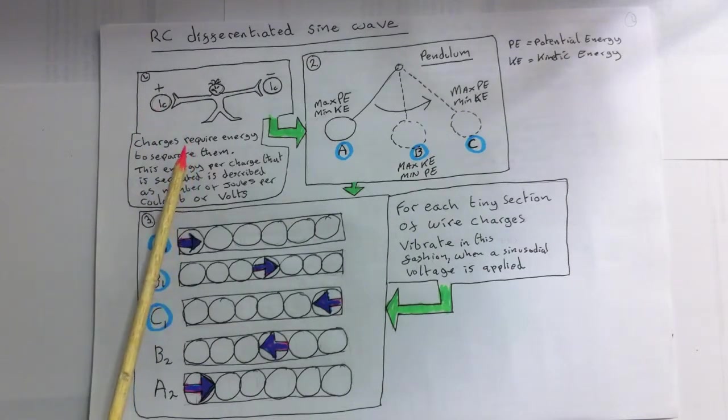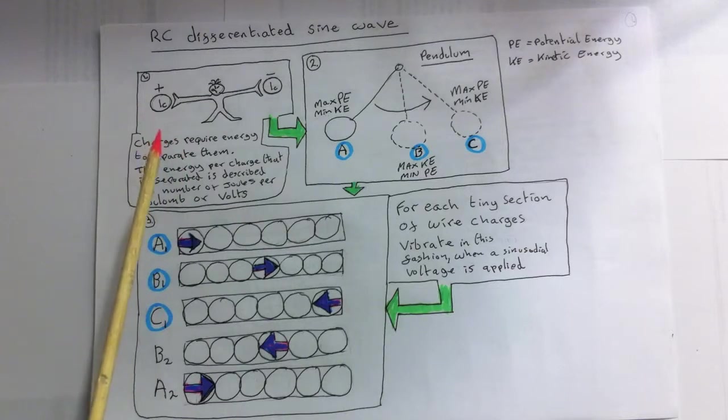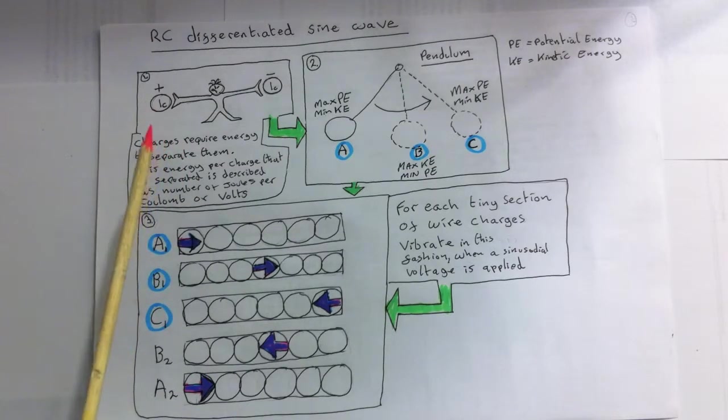So that's kind of voltage in a nutshell. Well, so now, how does a sinusoidal voltage source behave?